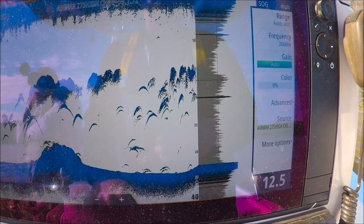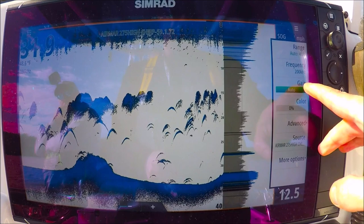Alright guys, I want to take a minute and show you how I set up my echo sounder for my NSS EVO 3. What I like to do is put my gain on auto to get started, my color at zero.